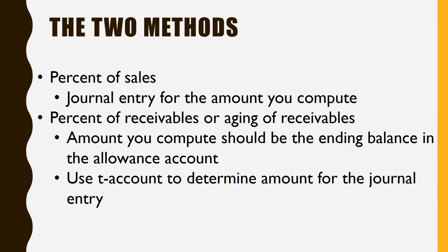In summary, the two methods: percent of sales — easy. Do your computation, whatever percent they tell you of sales, make that your journal entry. If you see percent of receivables or aging of receivables, then what you're finding out is the ending balance in the allowance account should be. You're figuring out how much of your receivables are going to go bad, so then you use the T-account to figure out the amount of the journal entry.